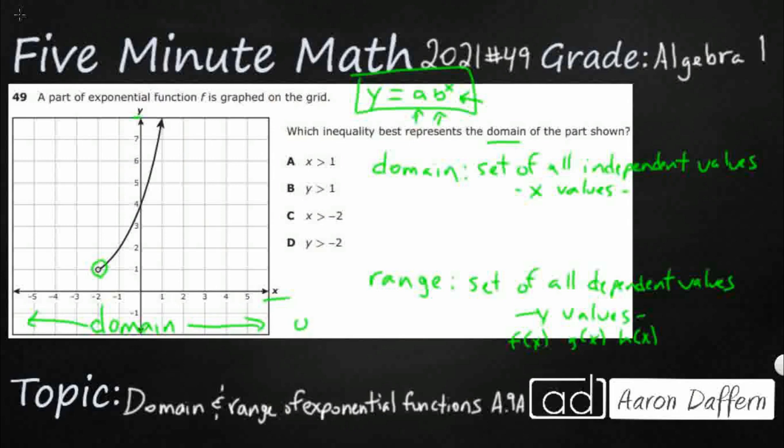So if we have an open circle, that means we're not going to include that number. See how that circle is sitting on the negative 2, if we're looking on the X axis? That means we're not going to include the negative 2 in our domain. We're just going to say greater than or less than.